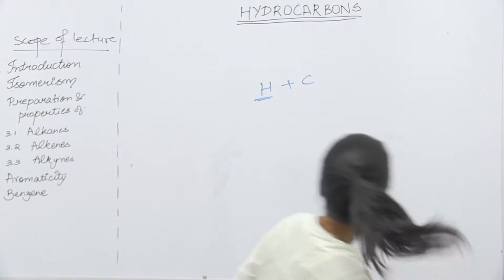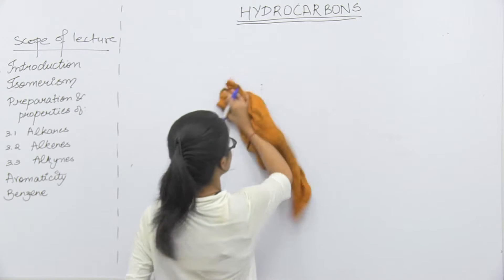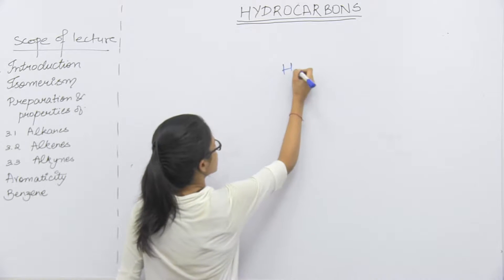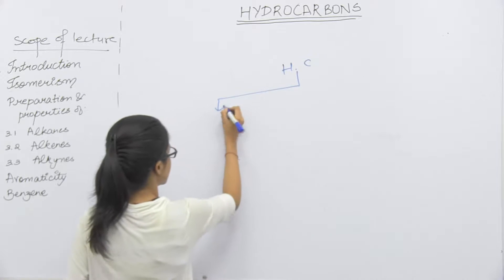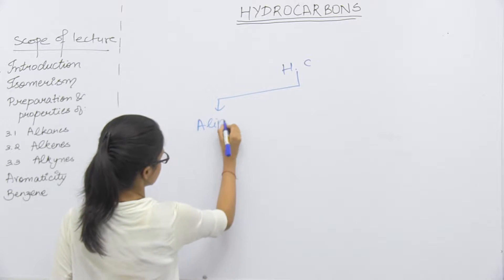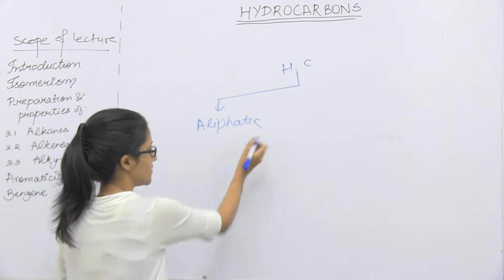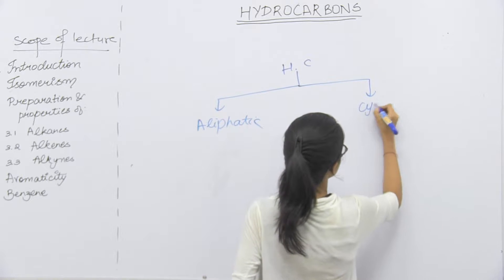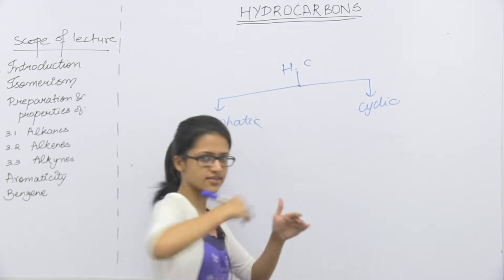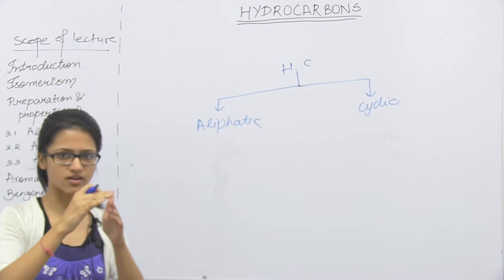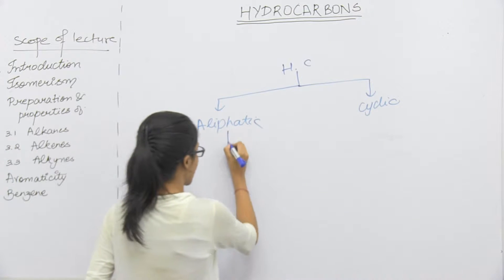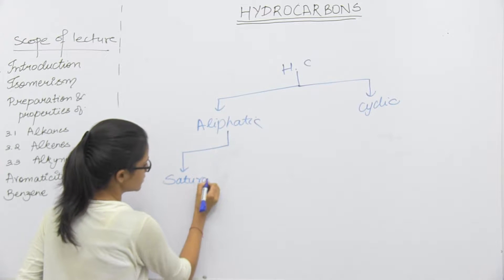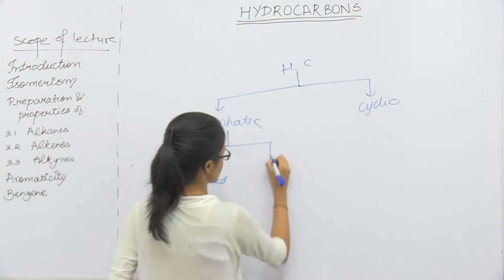So, let's take the classification of hydrocarbons. How can we classify hydrocarbons? We can do this: aliphatic — straight chain — and cyclic. Cyclic, obviously, we can do a cycle in a chain. Aliphatic straight chain, we can do saturated and unsaturated.